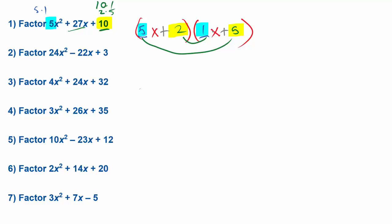So 5 times 5 is going to give me 25x. And then 2 times 1 gives me 2x. So 2x and 25x gives me 27x for the middle. So that should check out.